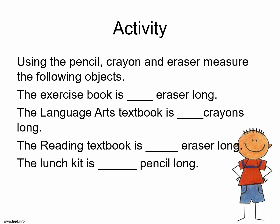So the language arts textbook is — and you state whatever it is you are using to measure it. Remember, the reading textbook is the Caribbean Rhythm Reader that your child would have been using. And then the lunch kit: you are not measuring the height of the lunch kit; you are actually measuring the flat surface that would be on the counter. The child would line out the pencils or any object to state the length of the lunch kit.